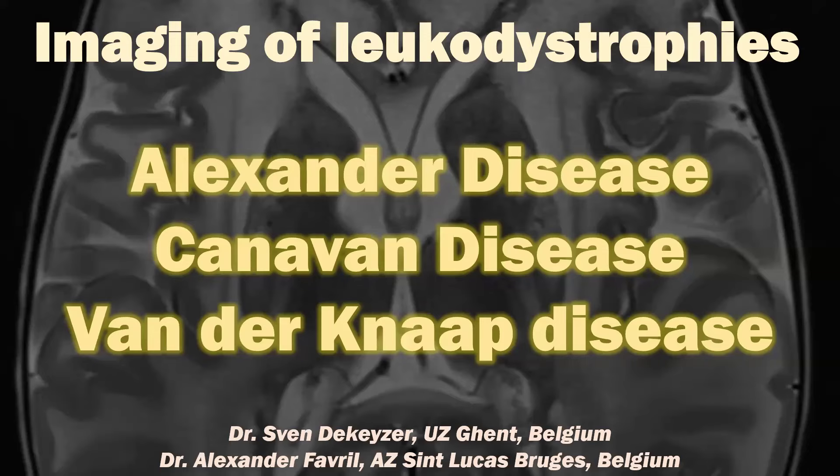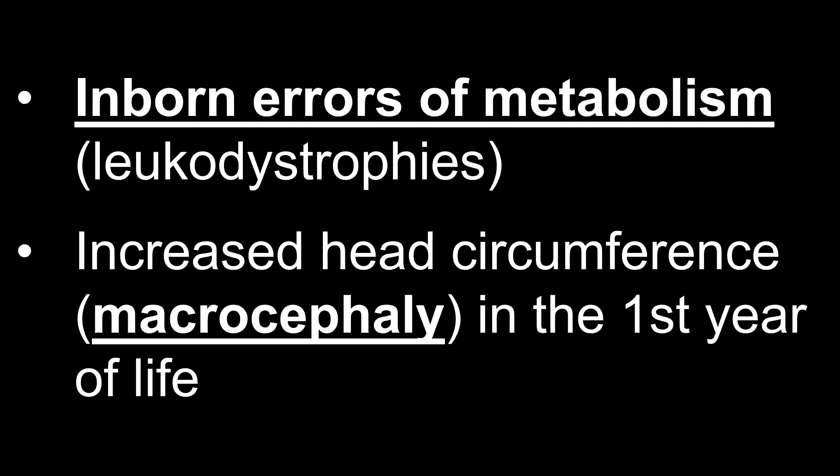Why did I select these three leukodystrophies? There are about 2500 inborn errors of metabolism out there. They are all pretty rare diseases, and each separate disease entity is most often rare, often with overlapping imaging and clinical features. I picked these three specific diseases because they have a characteristic clinical presentation that should help narrow the differential diagnosis: these three diseases generally present with macrocephaly and increased head circumference in the first year of life. Having this clinical information alongside leukodystrophy appearances on MRI should really help you arrive at the right diagnosis as a radiologist.